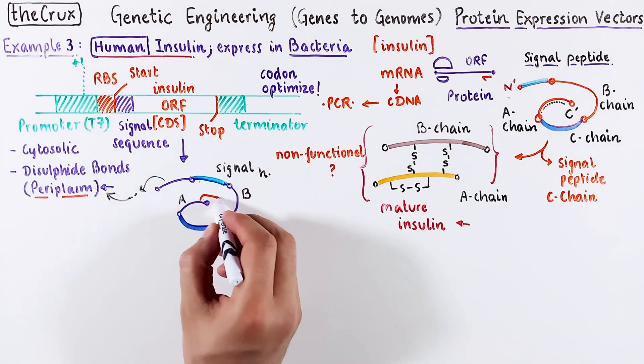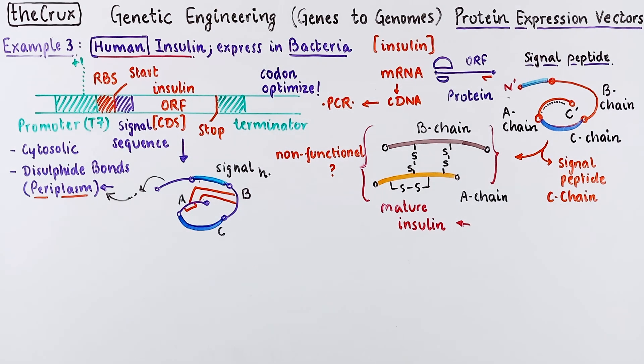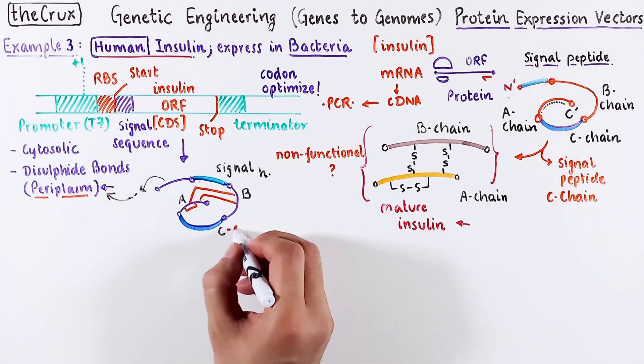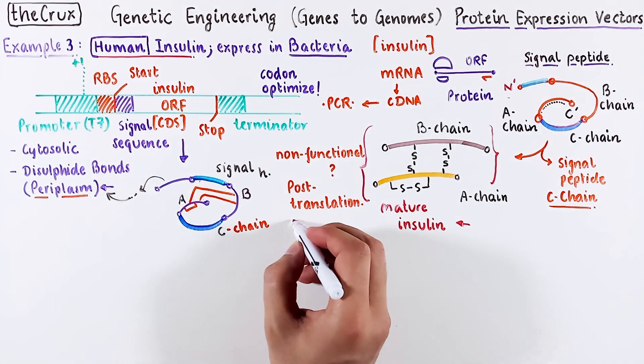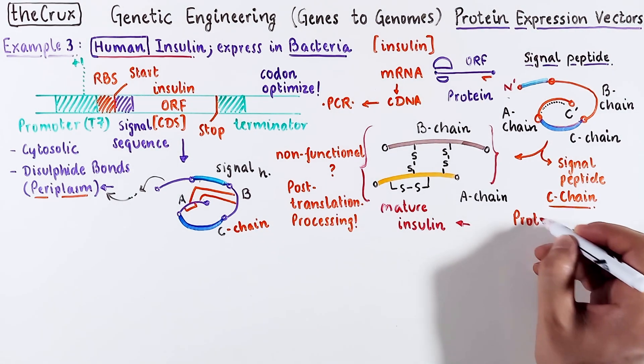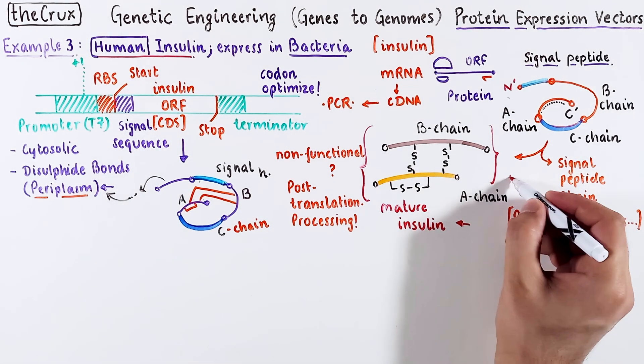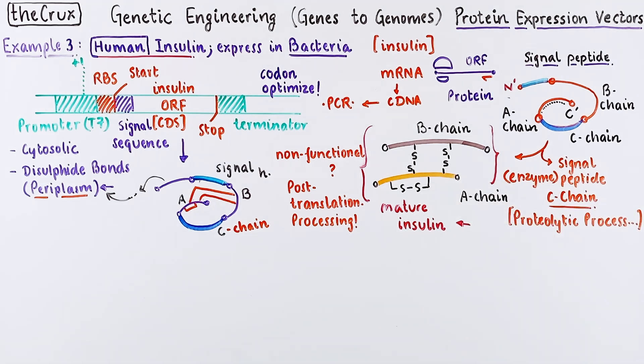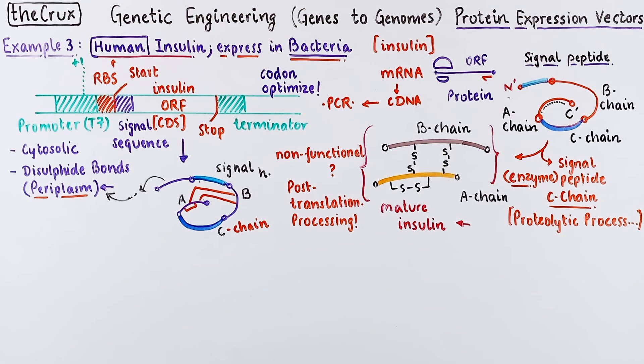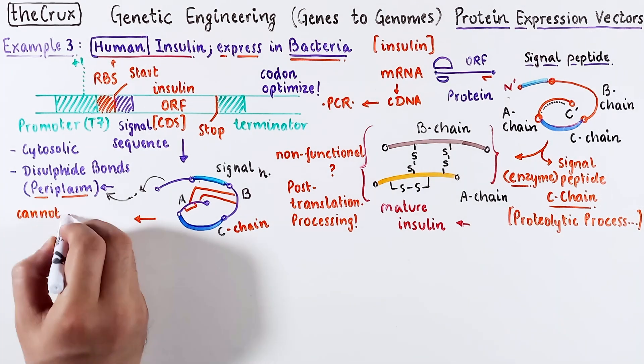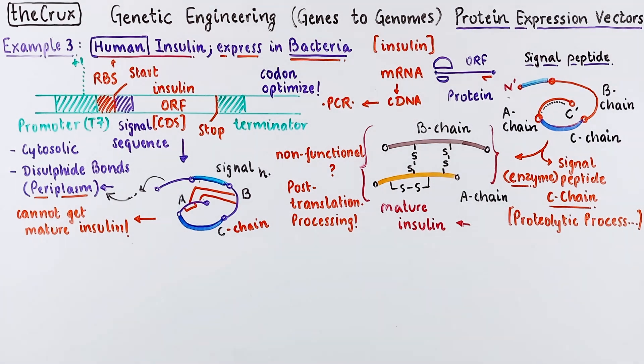You can argue that the periplasm correctly makes the disulfide bonds. So what is wrong with this protein? It is the post-translational modifications. The mature insulin undergoes proteolytic processing, whereby the signal peptide and the C-chain is removed. Enzymes that we have do this processing. These enzymes are not found in bacteria, so we cannot get mature insulin from this strategy. This was a real problem in the 70s and 80s, and scientists finally came to a solution which led to the development of humulin, the first recombinant human insulin.